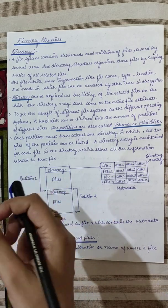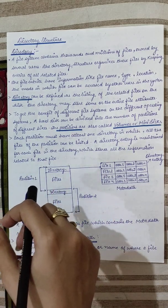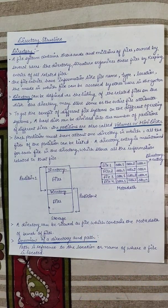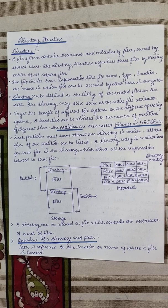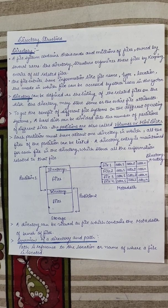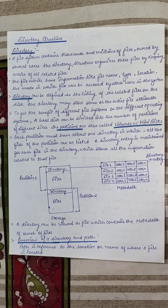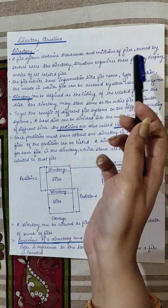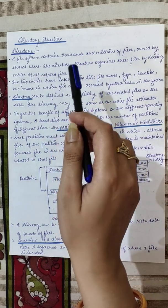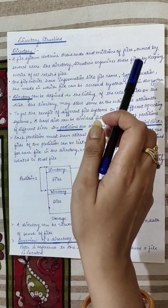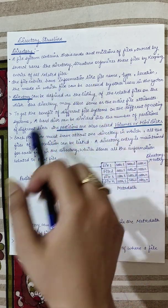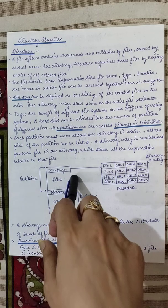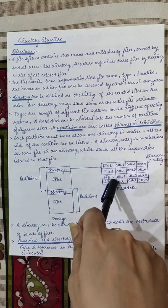The directory takes responsibility for storing information about all the files present in the system. The file system contains thousands and millions of files owned by several users. The directory structure organizes these files by keeping entries of all the related files, so all files are stored in the directory — many files can be present in that directory.